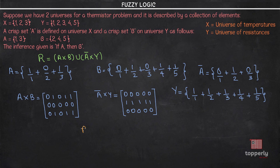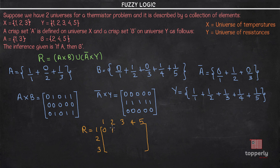So we have R with rows being elements of universe X: 1, 2, and 3, and columns being elements of universe Y: 1, 2, 3, 4, and 5. We then perform the union operation, taking the maximum of all elements. Maximum of 0 and 0 is 0, maximum of 1 and 0 is 1, 0 and 0 is 0, maximum of 1 and 0 is 1, and maximum of 1 and 0 is 1.